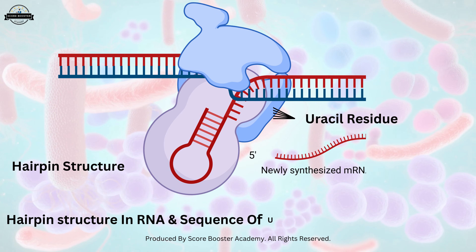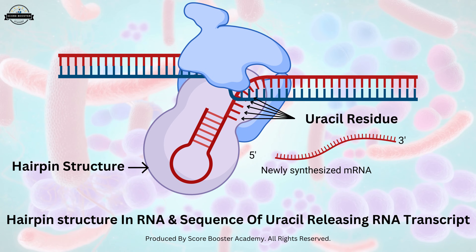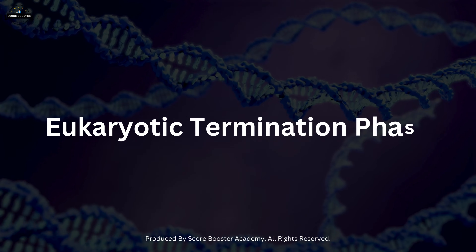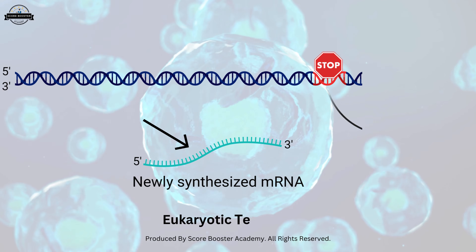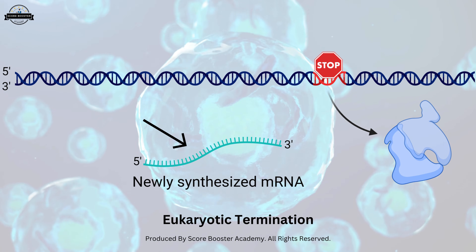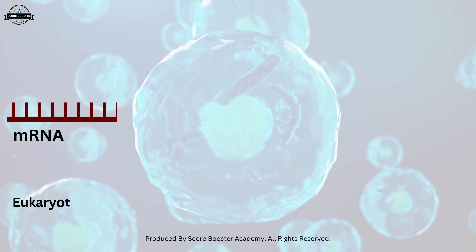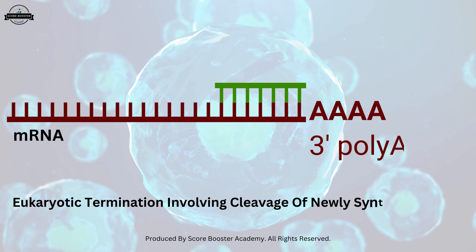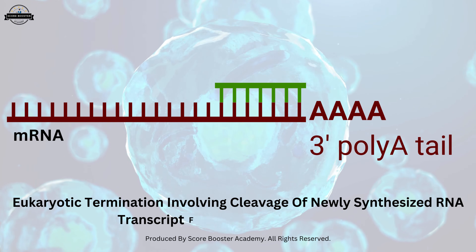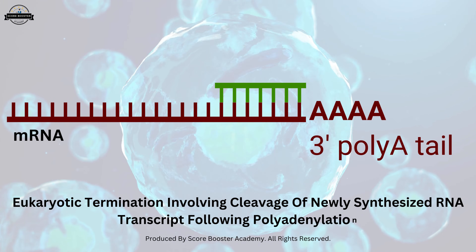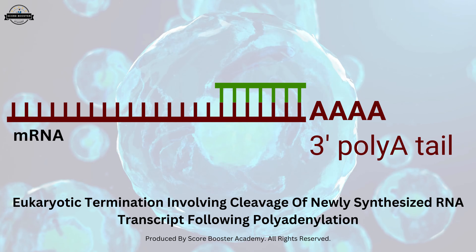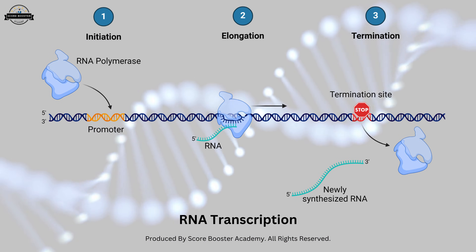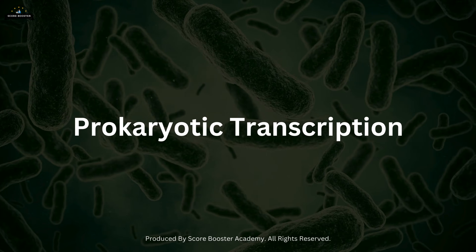Together, they destabilize the RNA-DNA hybrid and release the RNA transcript. In eukaryotes, termination involves cleavage of the newly synthesized RNA transcript, followed by polyadenylation. Specific sequences in the RNA facilitate this process, and a set of proteins recognizes these sequences, ensuring the RNA transcript is properly processed and ready for translation.